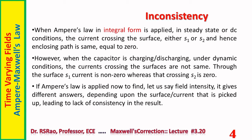When Ampere's law in integral form is applied in steady state or DC conditions, the current crossing either surface S1 or S2 and hence the enclosed path integral are both equal to zero. However, when the capacitor is charging or discharging — that is, when dynamic or time-varying situations are prevailing — the currents crossing the two surfaces are not the same. Through S1 the current is non-zero, whereas the current crossing S2 is zero. Applying Ampere's law now gives different answers depending on which surface or current is picked up, leading to inconsistency in the result.